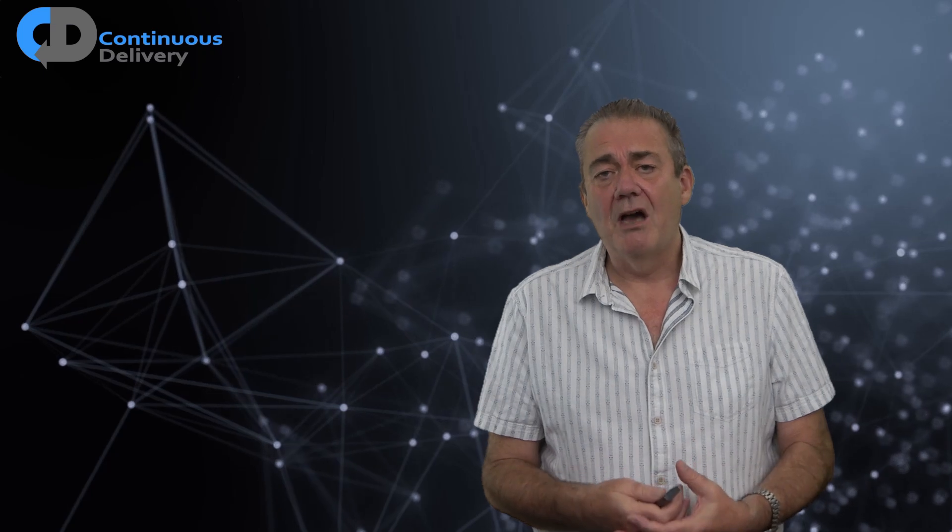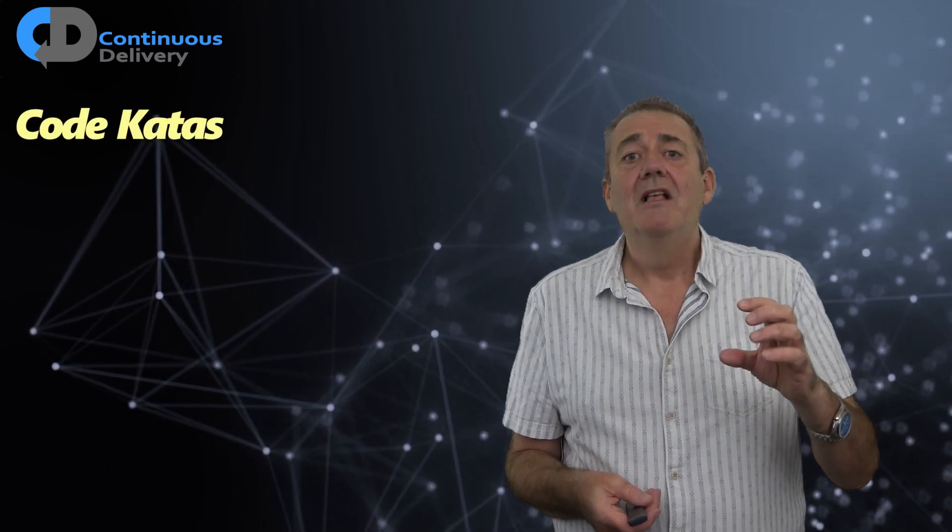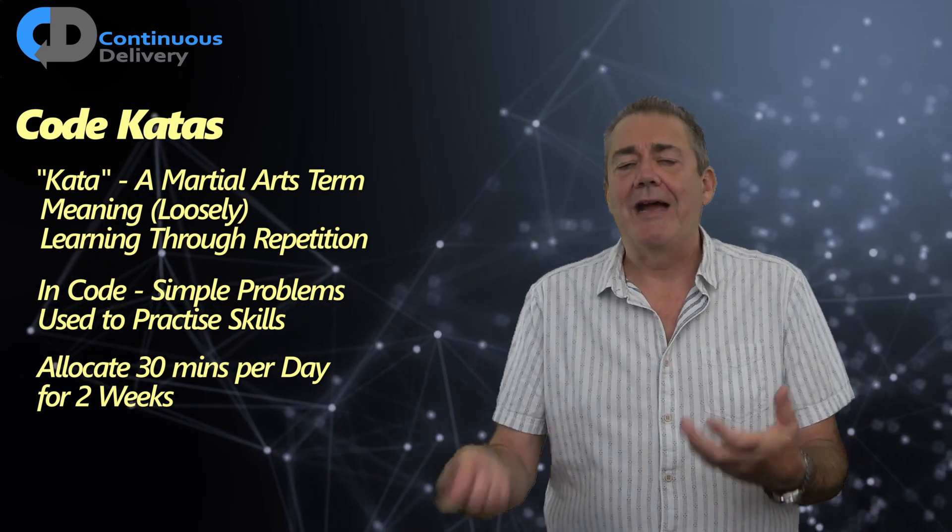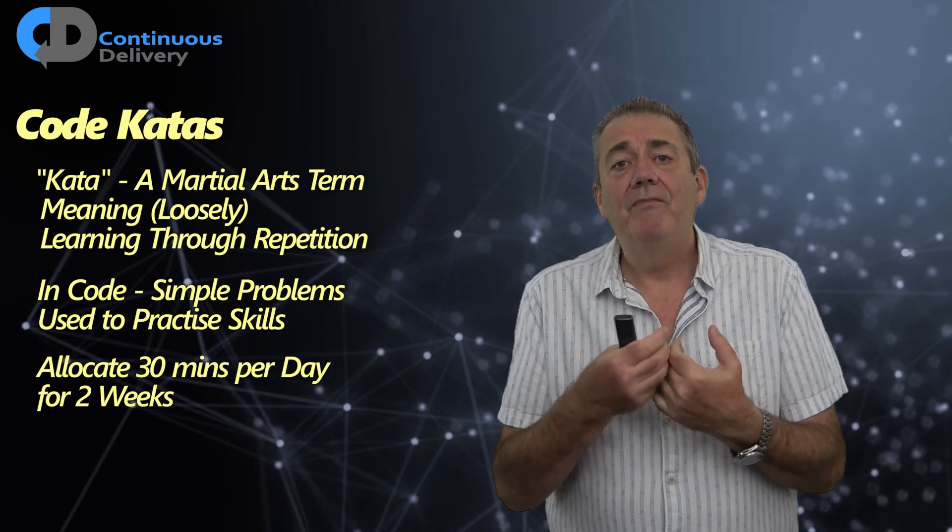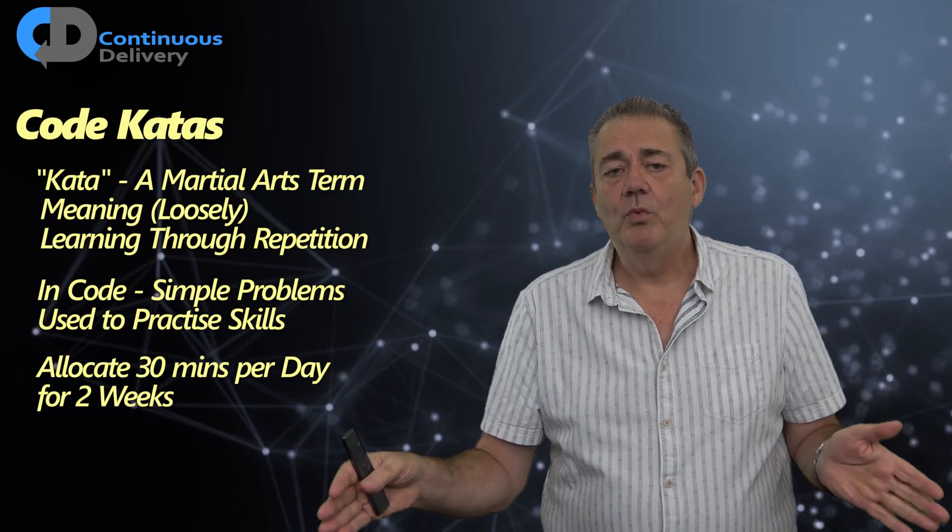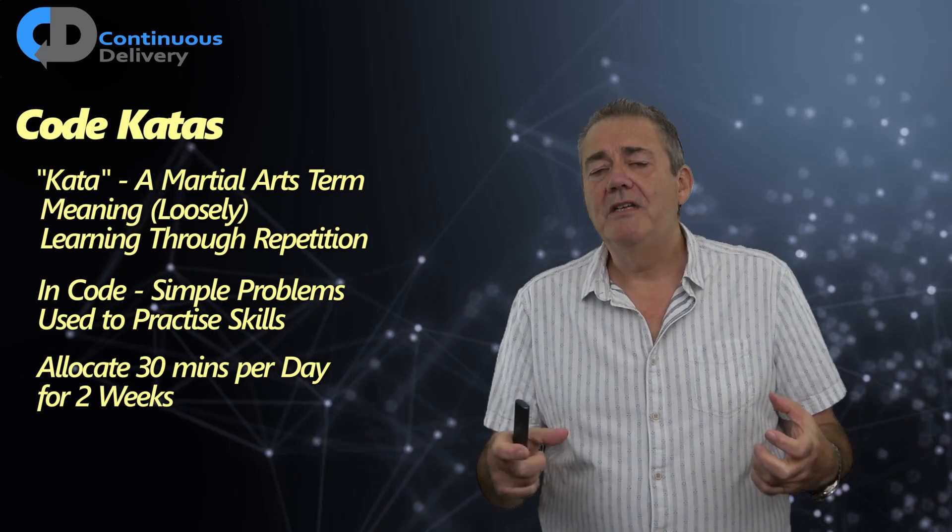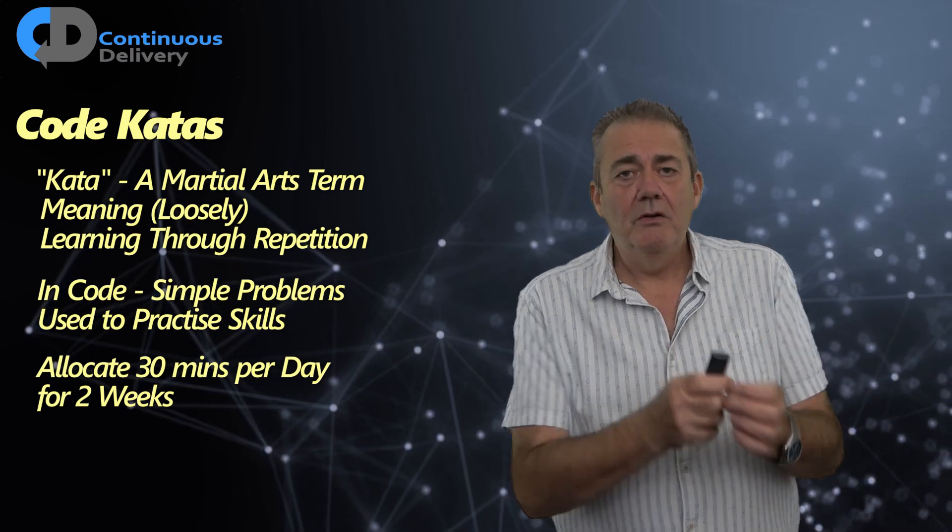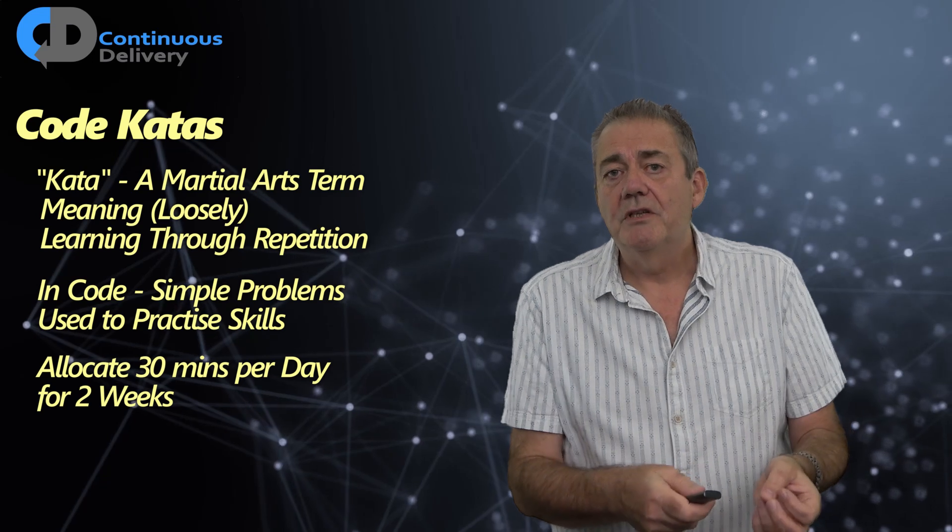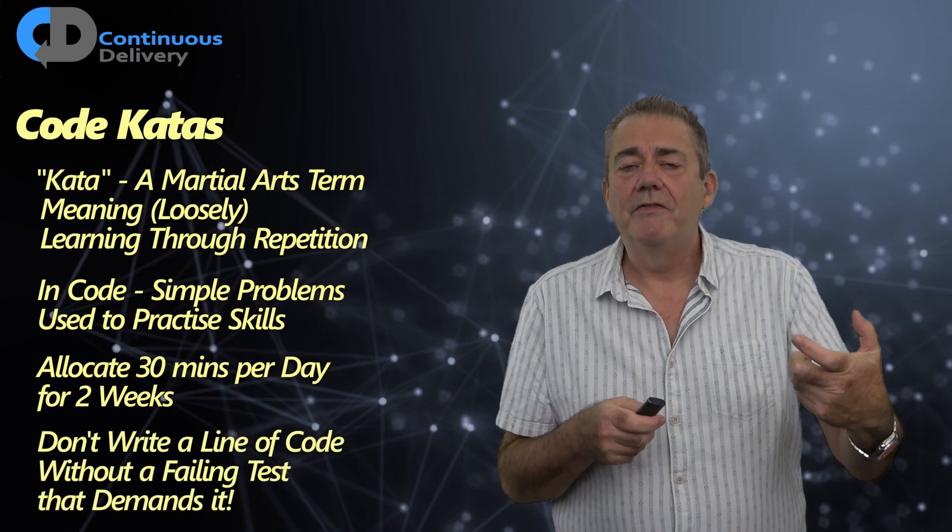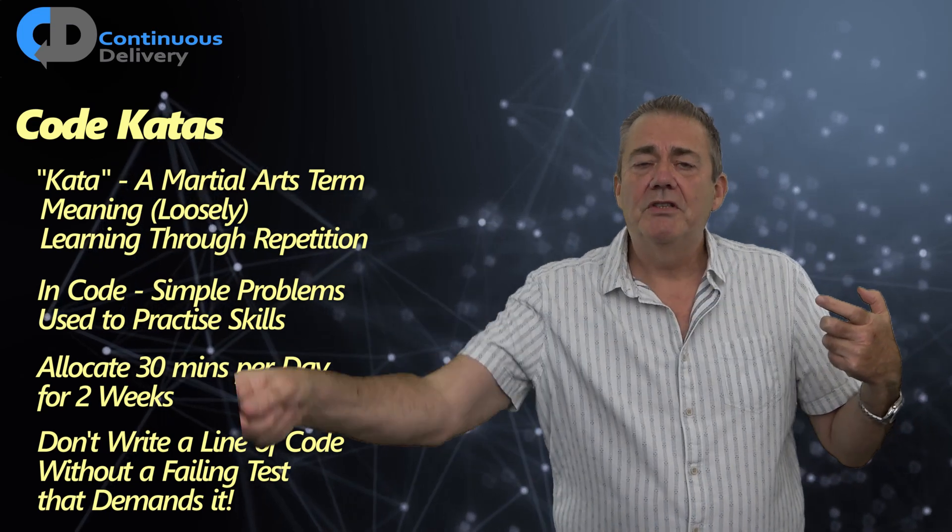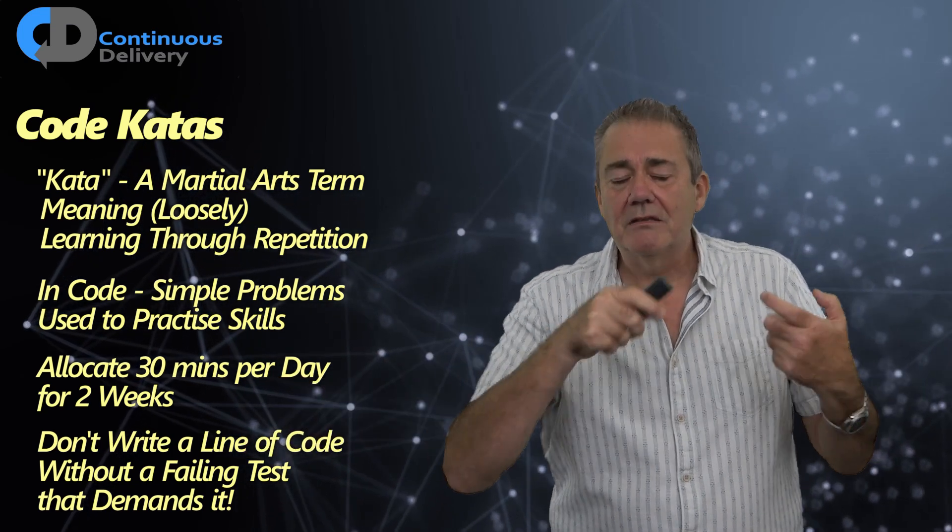To get started with this, I recommend that you look at something called coding katas. Coding katas are simple programming exercises that allow you to rehearse, practice your discipline. Pick a coding kata, something really simple, something like fizz buzz or adding fractions. Just pick a really simple little exercise and perform that exercise repeatedly over a period of weeks. My recommendation is that you allocate half an hour every day for at least two weeks and spend half an hour every day performing one of these coding katas that you like. Use test-driven development and really stick to the rules. Don't write a line of code that isn't demanded of you by a test. So always start from the test. At the point at which you write your test, make the test force you to create the classes that you need. Make it force you to create the methods you need and so on and so on. Follow that discipline.